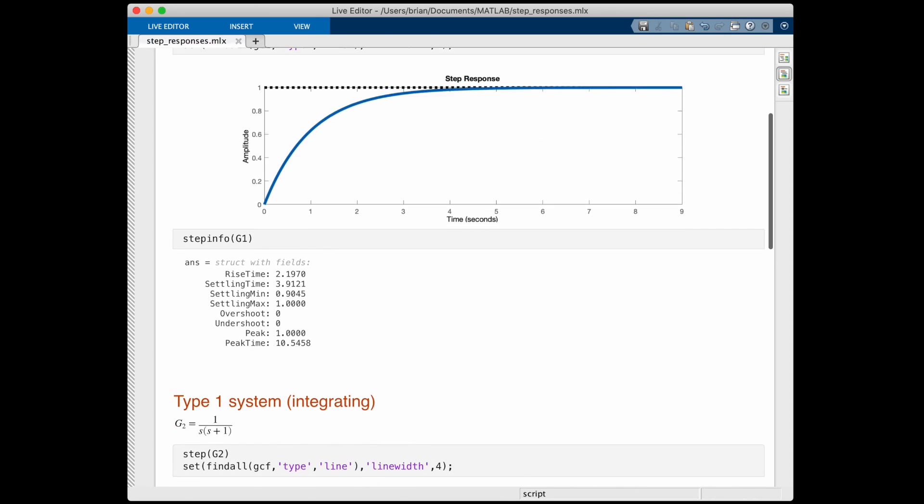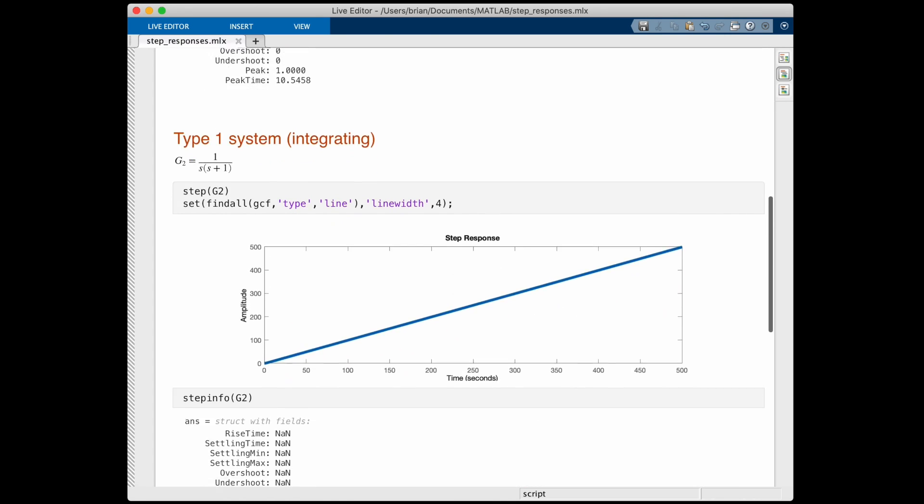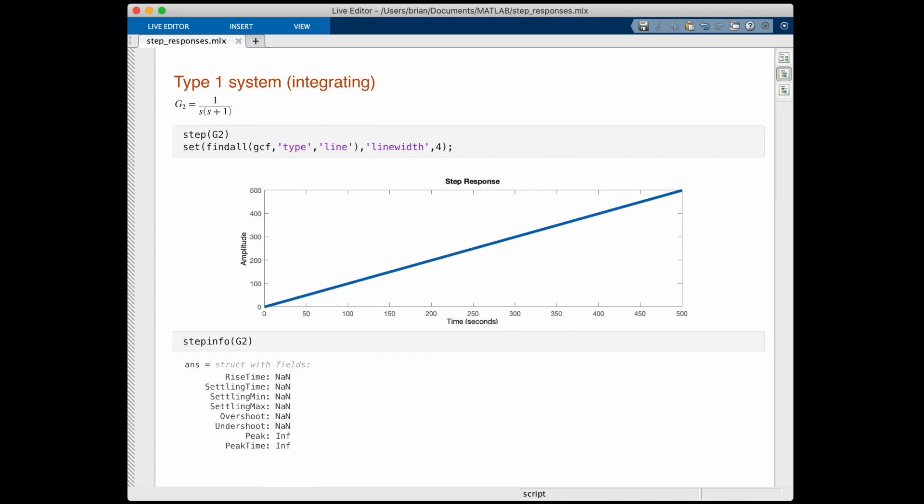Now let's move on to the integrating system with its response that looks like a ramp. The step info for this is not so good. There's no rise time or settling time. There's no such thing as overshoot or undershoot since the final value is infinite. And it also happens to be the peak as well, infinite. So this doesn't really tell us a whole lot about our system.